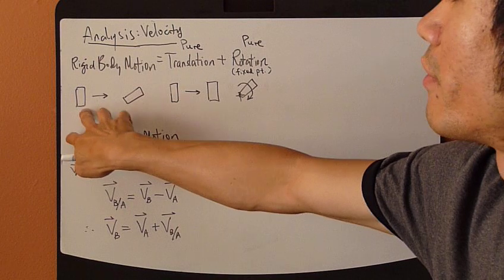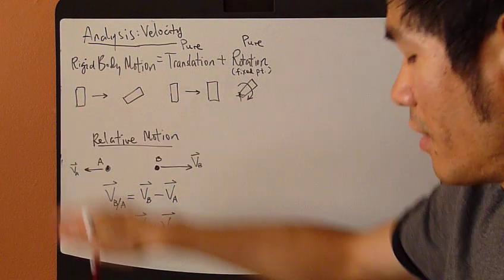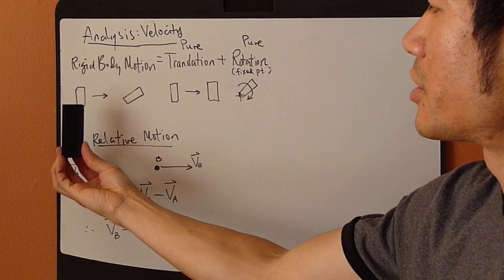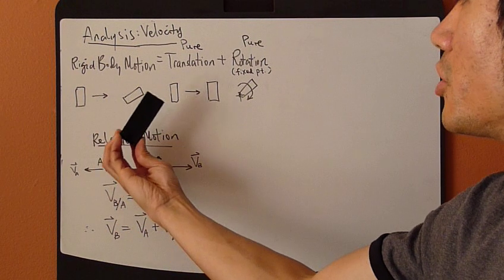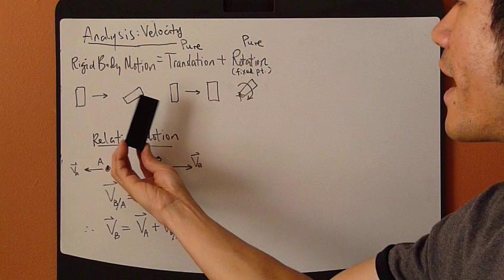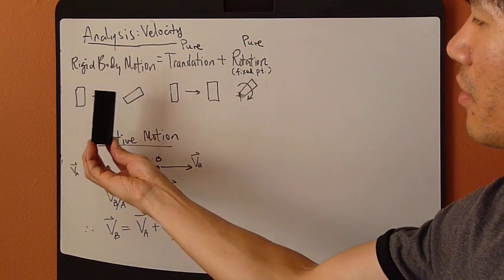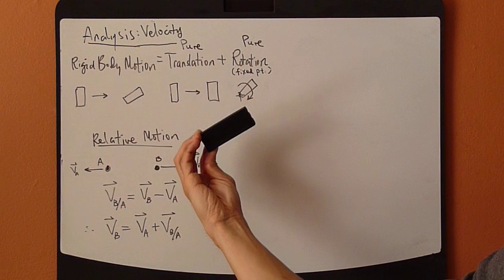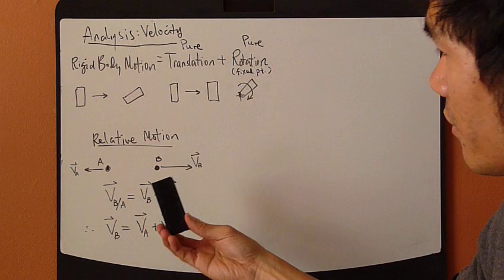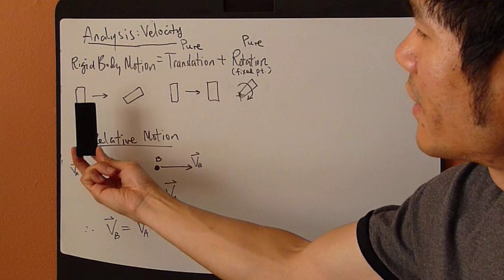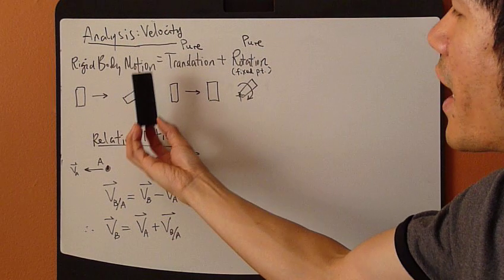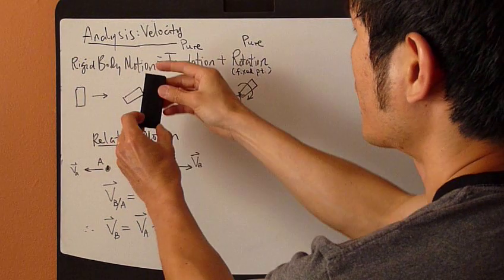Graphically, consider a rigid body like a box — an eraser. This eraser experiences rigid body motion, moving from one position to another while also rotating at the same time. So it's moving and rotating simultaneously.